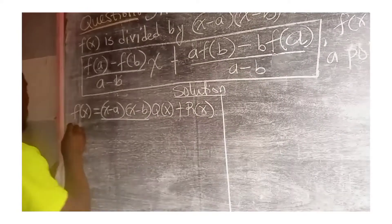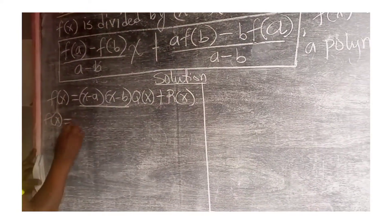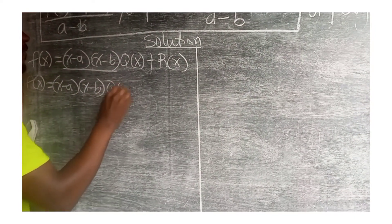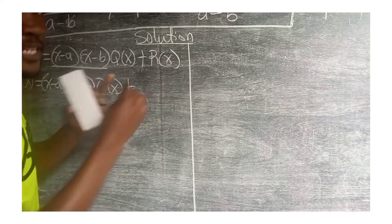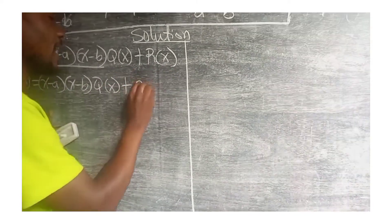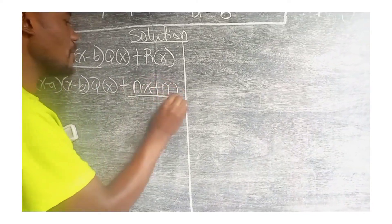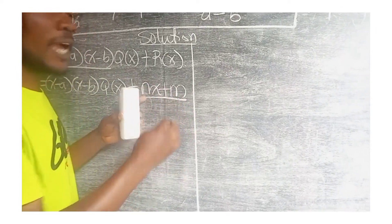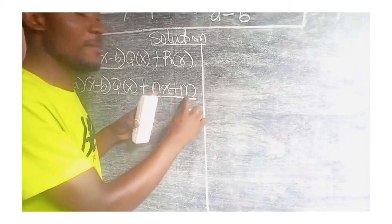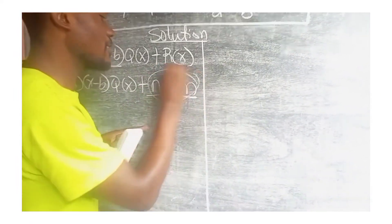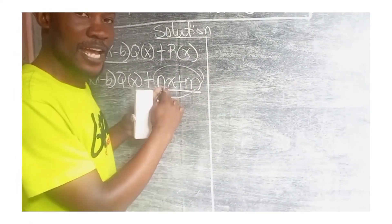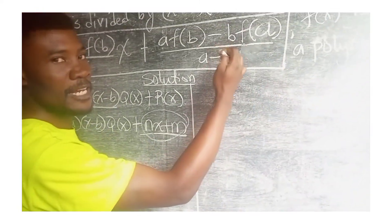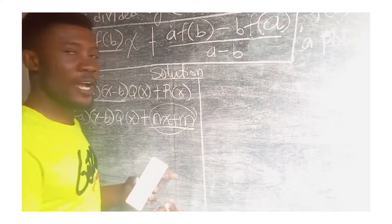Therefore, we express our f(x) as (x-a)(x-b)q(x), plus the remainder, which is a linear function. We can choose nx+m, where n and m are real numbers. And our interest is to find this m and n, since this will give us our remainder. Once we are able to find n and m, we substitute it here, and then it will give us this desired remainder that we want.